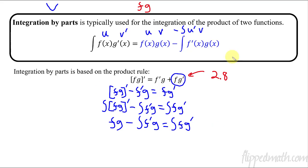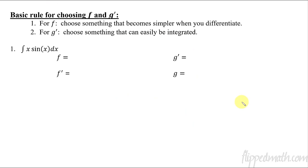This might be really confusing right now, but you're going to see in the problems that it works. It's really not too bad — you just have to recognize a few things to make this work properly. The tricky part is just identifying what is your f and what is your g prime. It does not always go in order f and then g prime — sometimes it does, sometimes it doesn't. You have to be careful and look at what would make most sense.